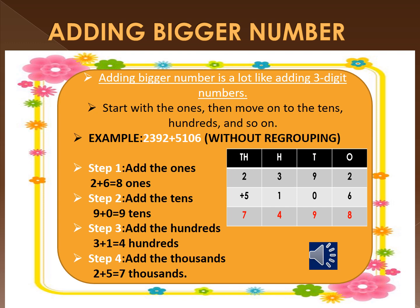Add the tens: 9 plus 0 is equal to 9 tens. Add the hundreds: 3 plus 1 gives you 4 — four hundreds. The final step is to add the thousands: 2 plus 5 gives you 7 thousands. So finally you get 7,498 as your answer.